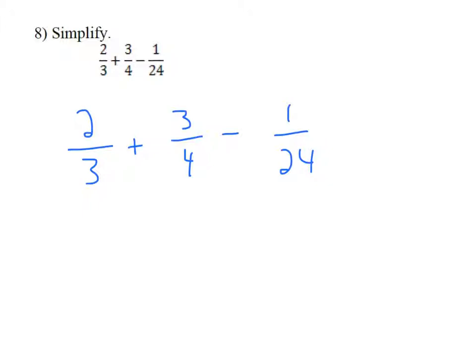I have a 3, a 4, and a 24 as denominators. Starting with the biggest number, 24, use this to look for your least common denominator.